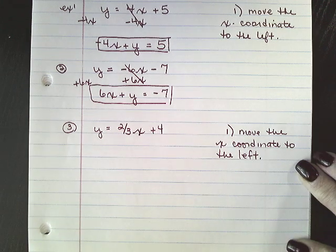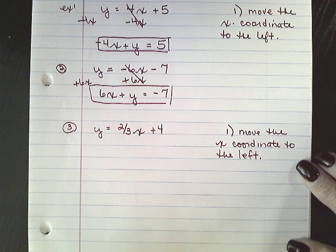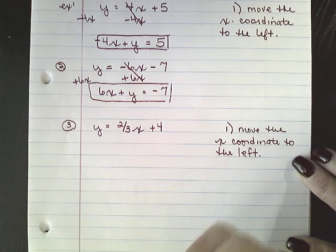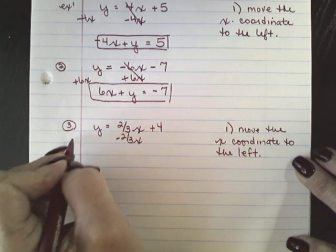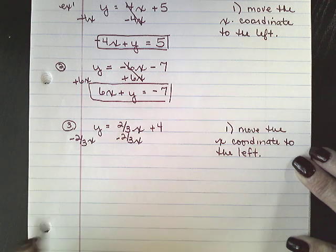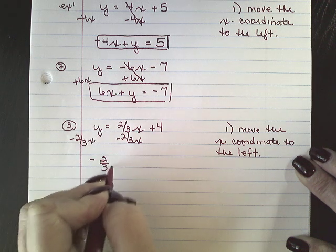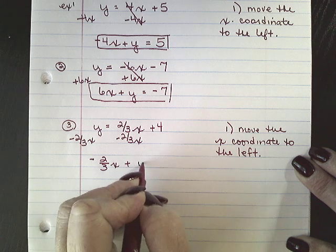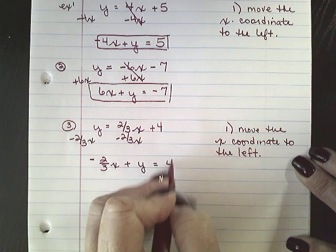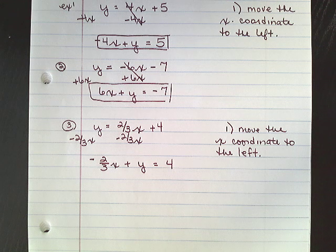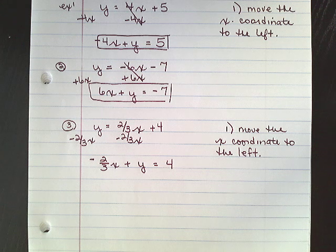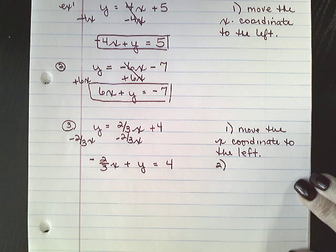I'm going to take that and I'm going to move my 2 3rds x over. So I'm going to have negative 2 3rds x plus y is equal to 4. Now we cannot leave it like that. You cannot have a fraction or ratio as part of your ax plus by equals c. That has to always be a whole number. So this is going to require one final step.